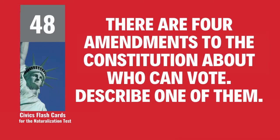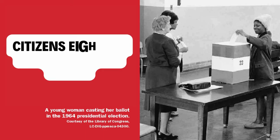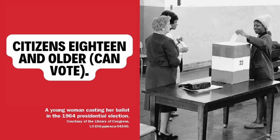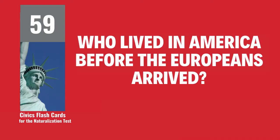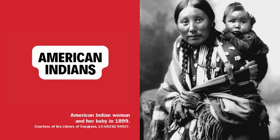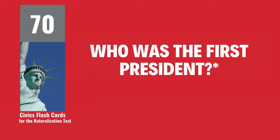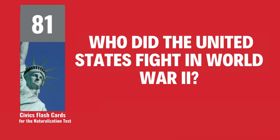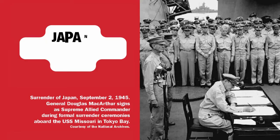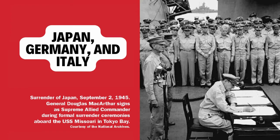There are four amendments to the Constitution about who can vote. Describe one of them. Citizens 18 and older can vote. Who lived in America before the Europeans arrived? American Indians. Who was the first president? George Washington. Who did the United States fight in World War II? Japan, Germany, and Italy.